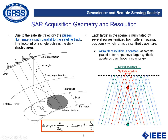Each target in the scene is illuminated by several pulses. For instance, a near target may be illuminated by three pulses forming the synthetic aperture, while a target farther away will be illuminated by a larger number of pulses, meaning a larger synthetic aperture. The big advantage is that the azimuth resolution is now constant and roughly equal to half of the antenna size in azimuth. The range resolution is exactly the same as with the standard radar.